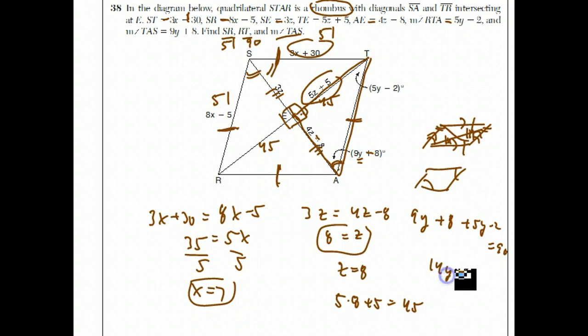That gives 14y plus 6 equals 90. Subtract 6 from both sides, 14y equals 84. Divide both sides by 14 and get 6... sorry, 7. Now that y is identified, we can plug the 7 in here. 9 times 7 plus 8 is 63 plus 8, which is 71. And that's the answer to question 38.